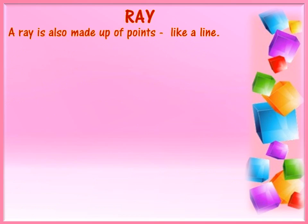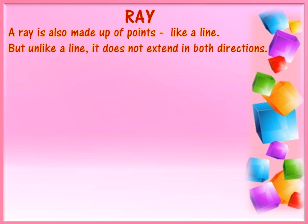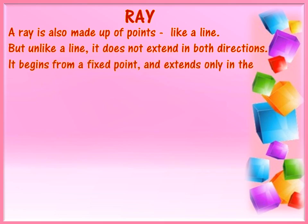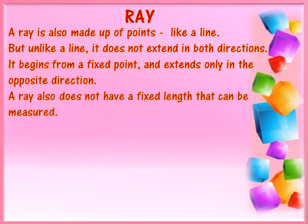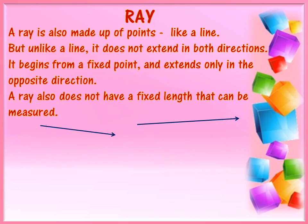Ray. A ray is also made up of points like a line. But unlike a line, it does not extend in both directions. It begins from a fixed point and extends only in the opposite direction. A ray also does not have a fixed length that can be measured. In the given examples, you can see that one end of the ray is fixed and the arrow at the opposite end denotes that the ray can extend in that direction.